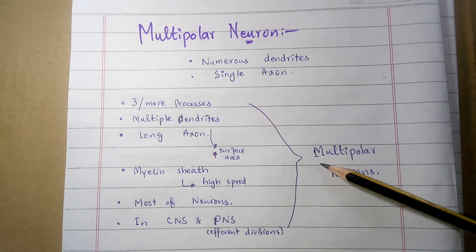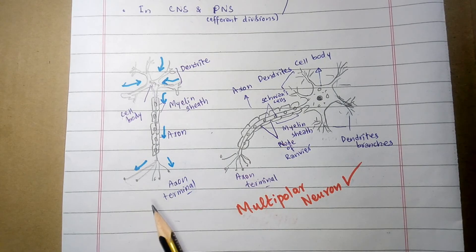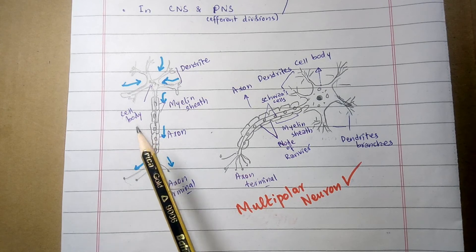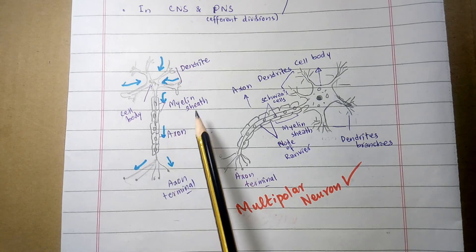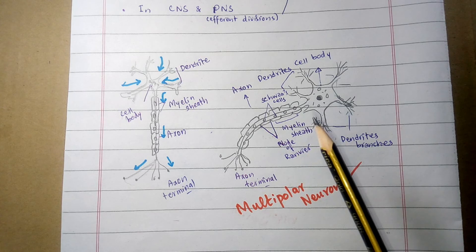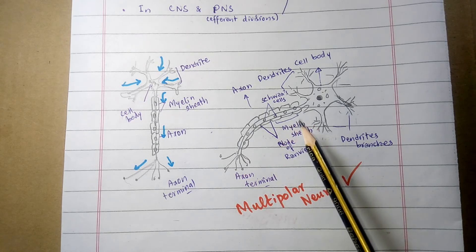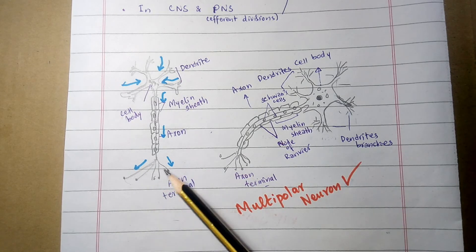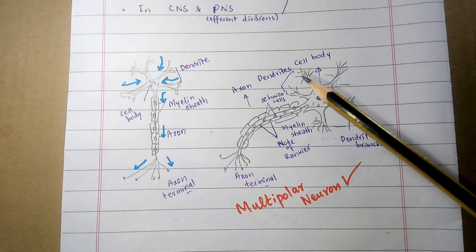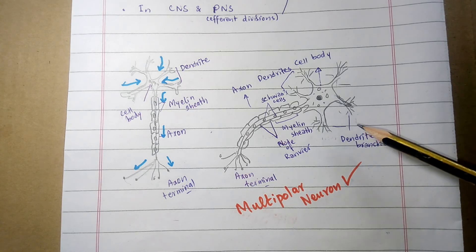Here is the diagram of the multipolar neuron with its structural anatomy. This is the cell body and one long axon. These are the dendrites. The axon is covered by the myelin sheath, which has a series of Schwann cells and the nodes of Ranvier — the gaps between the myelin sheath segments — then the axon terminal at the end of the axon connecting to the CNS. The dendrites and cell body branches are where the impulses or signals are received.